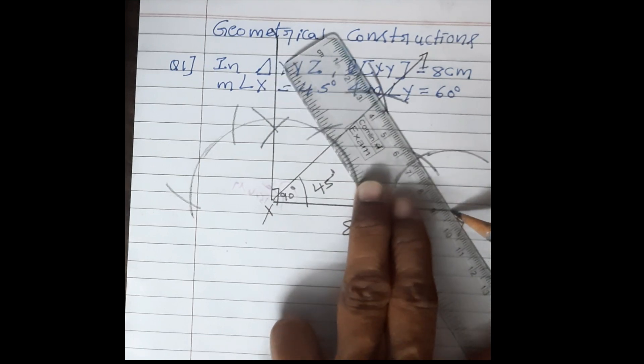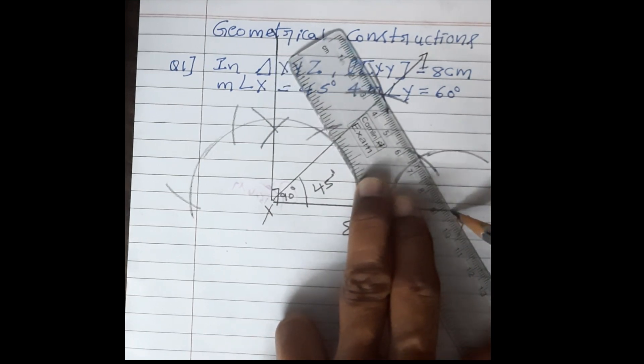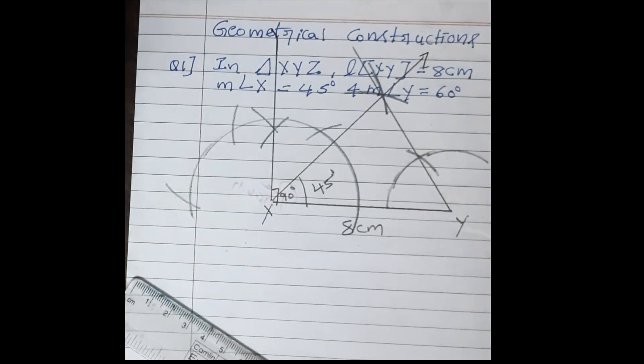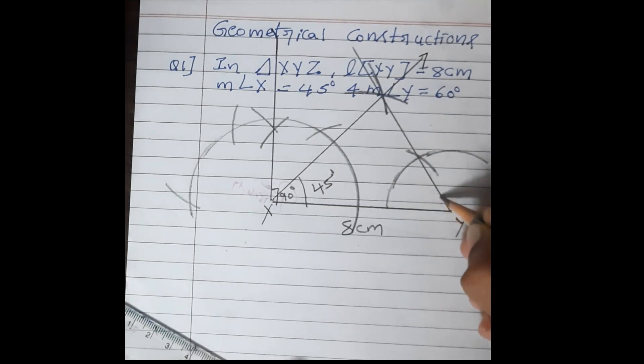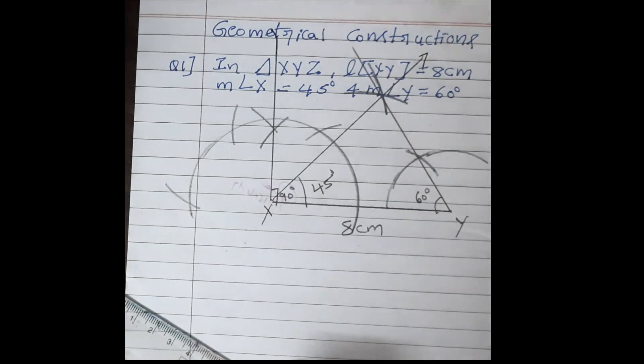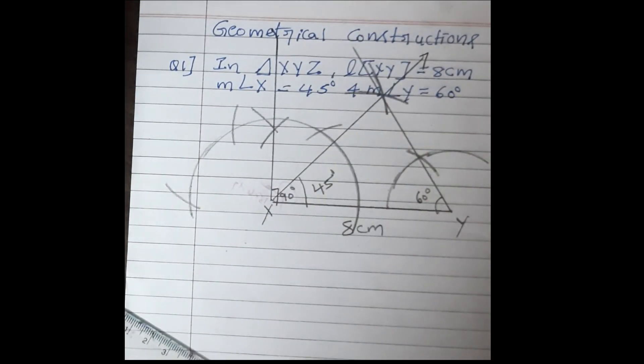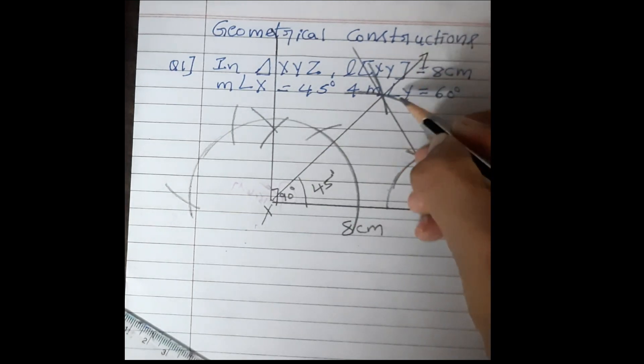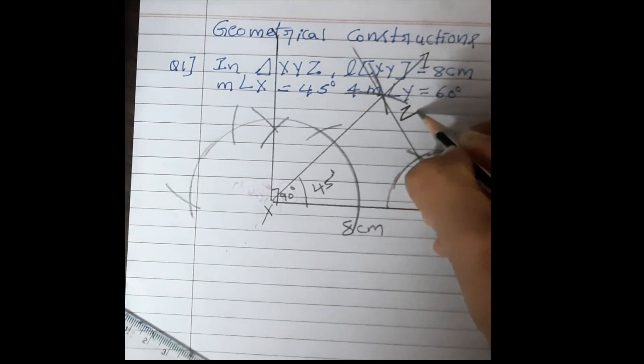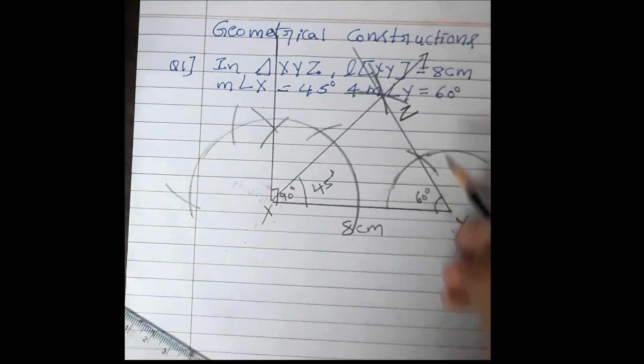We have to take the scale and we have to draw line like this. Now, this is what? This is 60 degrees. So this is our construction. Triangle XYZ. These two intersected. This is vertex point. This we will give the name Z. So XYZ is the required triangle.